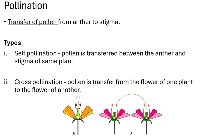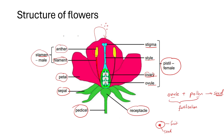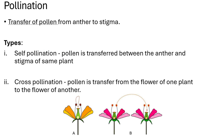Now let's look at the process of pollination. Pollen is produced at the anther — the yellow structure in the stamen — and when those pollen grains are transferred from the anther to the stigma, this process is known as pollination. Pollination is simply the transfer of pollen from anther to stigma. There are two types: self-pollination and cross-pollination.